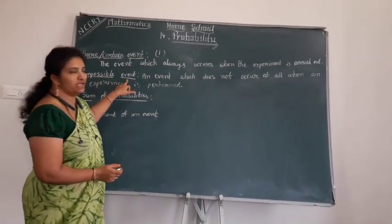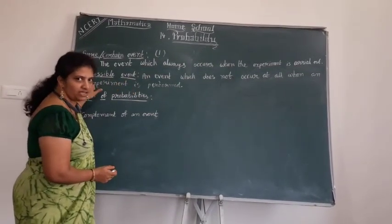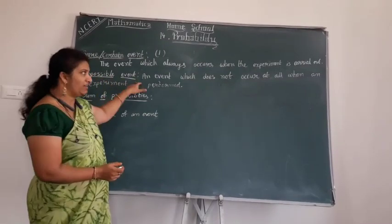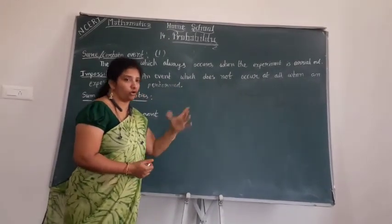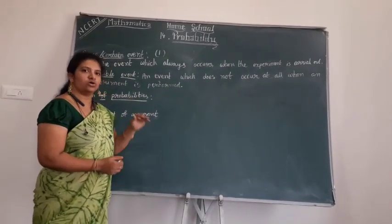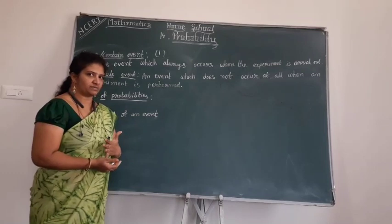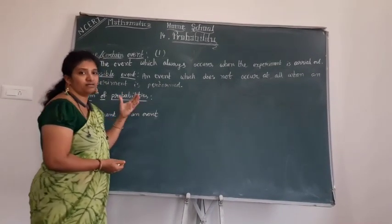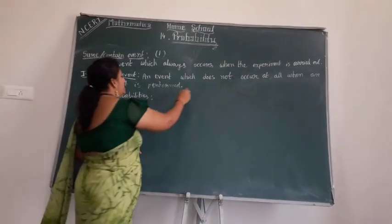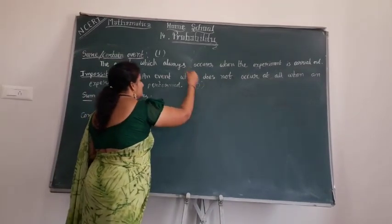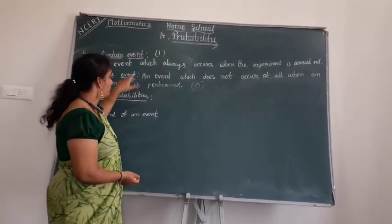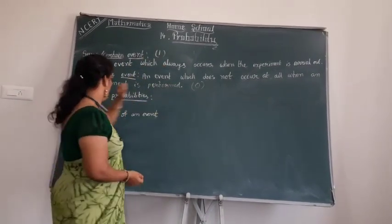Whereas, an impossible event — impossible in the name itself. It is an event which does not occur at all when the experiment is performed. No matter how many times you perform the experiment, you will not get that result. So we represent the impossible event as 0. A sure event has probability 1; an impossible event has probability 0.